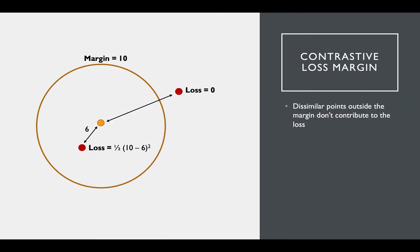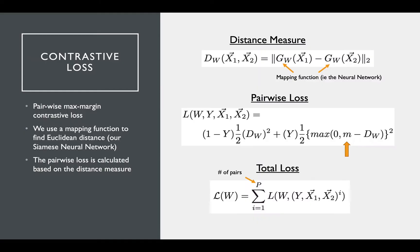The penalty is half the square of M, where M is the choice of the margin minus the distance.